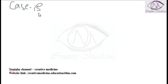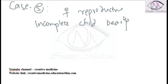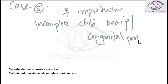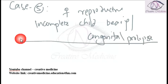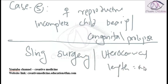Case 5 involves females of reproductive age group with incomplete childbearing or congenital prolapse. If the patient has incomplete childbearing or congenital prolapse — that is, if there is congenital prolapse in a nulliparous female — then we can do sling surgery. For sling surgery, the utero-cervical length should be normal.